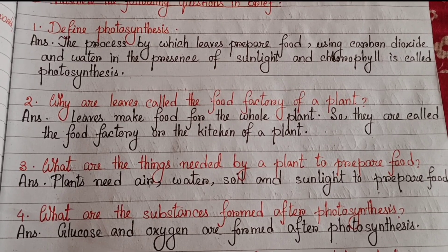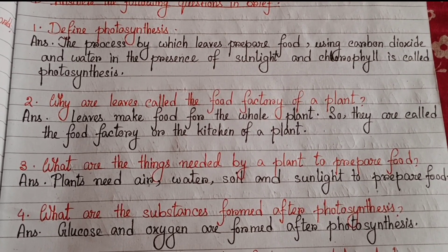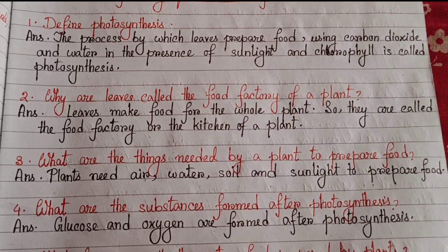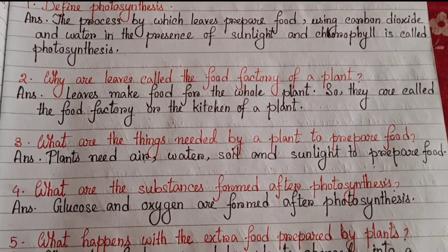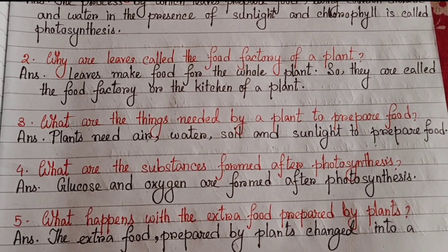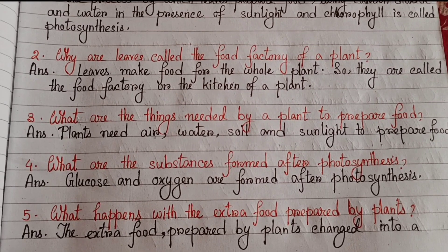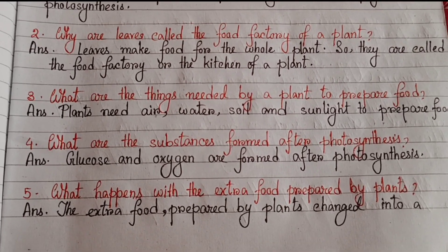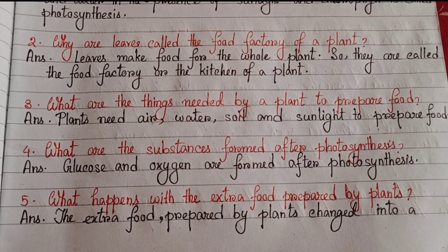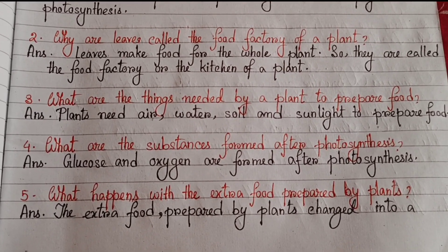Number three: What are the things needed by a plant to prepare food? Plants need air, water, soil, and sunlight to prepare food. Number four: What are the substances formed after photosynthesis? Glucose and oxygen are formed after photosynthesis.